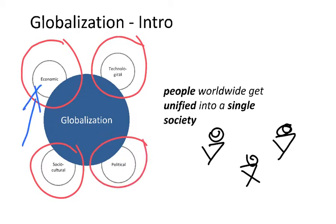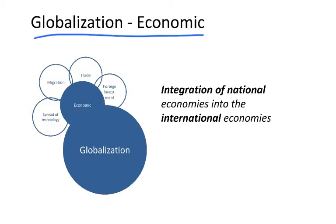Here we will be mainly looking at the economic dimension. When we look at globalization from the economic point of view, we see how different nations achieve greater integration of their economies. This integration comes from different dimensions: the spread of technology, migration — where people go to work in other countries — trade by exchanging goods and services between countries, and investing in other countries.